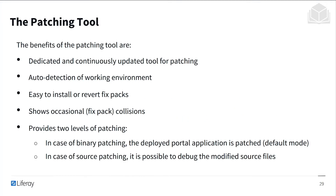The patching tool is dedicated and continuously updated for patching. It has auto-detection of the working environment, so we have to do minimal configuration ourselves. With the patching tool, it's easy to install or revert fix packs, and it shows occasional fix pack collisions if there are any. It provides two levels of patching: binary patching, where the deployed portal application is patched and this is used by default, and source patching, which makes it possible to debug the modified source files.